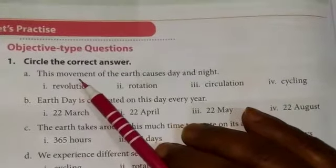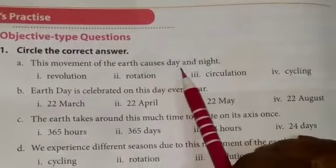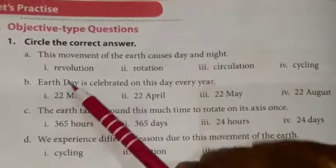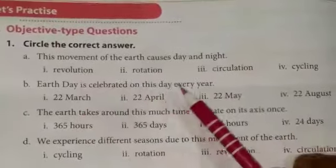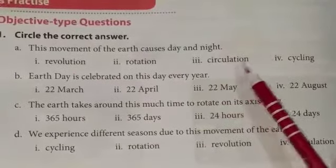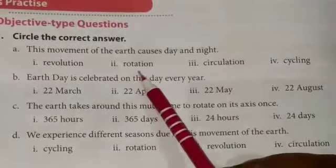This movement of the earth causes day and night. Options: revolution, rotation, circulation, cycling. Circle rotation.